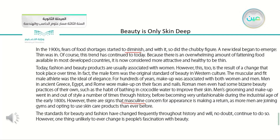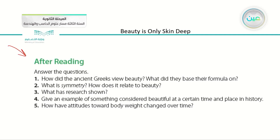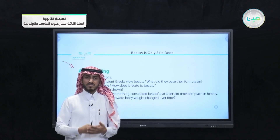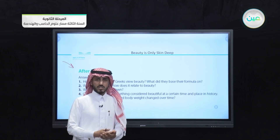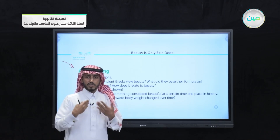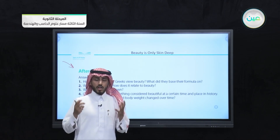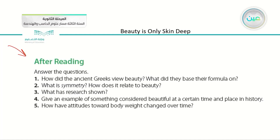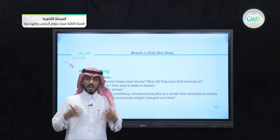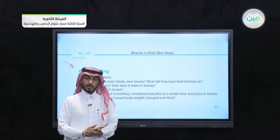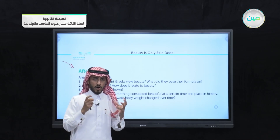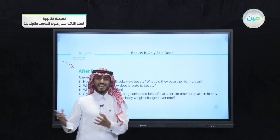Now let's go to the last part of our lesson today, which is after reading. Before we read this article, we put some questions in our mind to look up answers while reading. Now, after reading the essay, we have more questions to answer — five questions. The first one: how did the ancient Greeks view beauty? What did they base their formula on? To find the answer, you need to find the key words in the question — for example: ancient Greeks, view beauty, and formula. These key words help you find the proper answer.